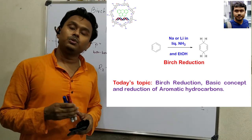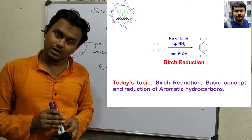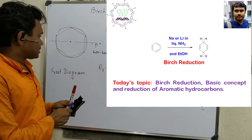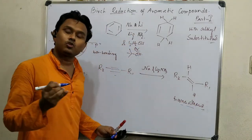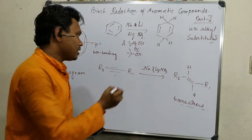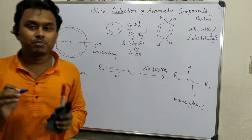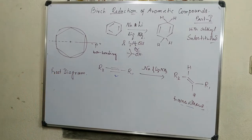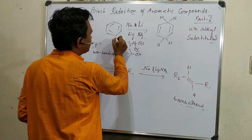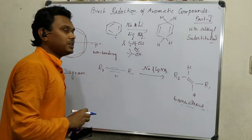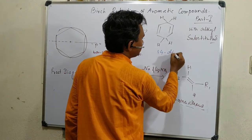Today we will mainly discuss about the Birch reduction of aromatic hydrocarbons. The Birch reduction of alkynes to the corresponding trans-alkene I have explained in one of my videos — a comparison of Birch reduction versus Lindlar catalyst — I suggest you please see that video. First of all, Birch reduction reduces the aromatic hydrocarbon, that is benzene, into a 1,4-diene.